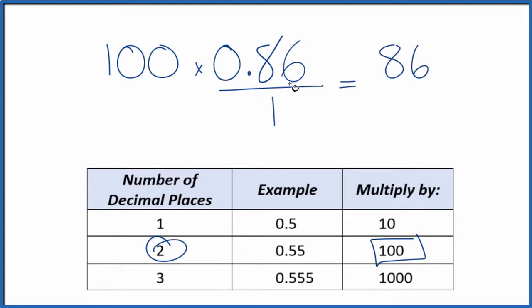But we can't just multiply the numerator by 100. We also have to multiply the denominator by 100. And that's because 100 divided by 100, that's 1. So we're multiplying this by 1. We don't change the value, just the way it's represented.